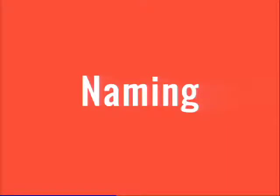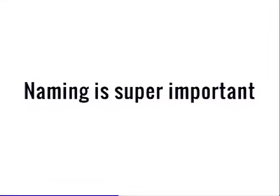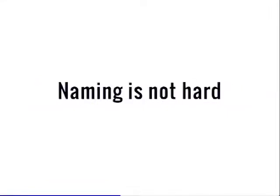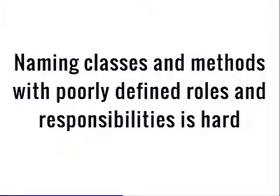Naming. Anybody who knows me knows I like to talk about naming — it's really, really important. Everyone likes to joke about caching, validation, and naming being so hard. But naming is not hard. Naming classes and methods with poorly defined roles and responsibilities is hard. So if you find yourself having a hard time naming a class, think about what that class is doing — it might be doing too much, or what it's doing may not make sense. Look at the comment on top of a class — quite a few cases where the comment actually says what it does, but the class itself doesn't suggest that in any way.